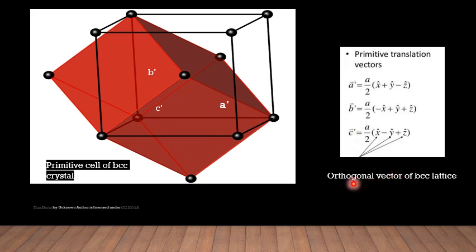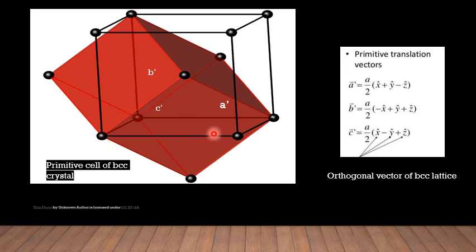Considering the orthogonal vectors and primitive translational vectors: if this atom is at the origin and we calculate the position of this atom, then this atom lies exactly at the center of this cell. So if this cell has a total length of a, then this central atom will have the length as a/2. So the magnitude of the translational vector a' is a/2.